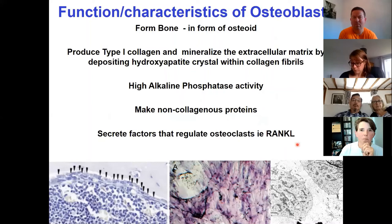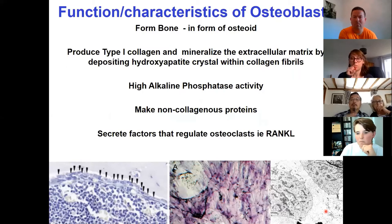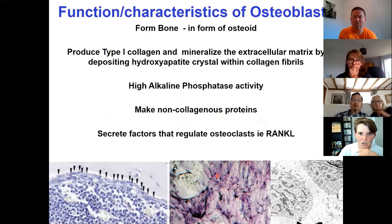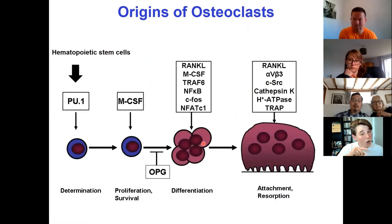Osteoblasts are the cells that form bone. They produce the osteoid — the collagen I mentioned earlier with its fibril strength — and they deposit the hydroxyapatite crystals within that collagen. They have high alkaline phosphatase activity, which you may have heard of being measured in blood tests. They also make the non-collagenous proteins that coordinate bone matrix organisation, and they secrete factors that communicate with osteoclasts.